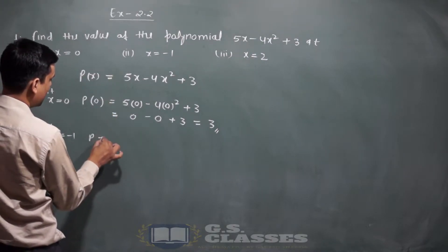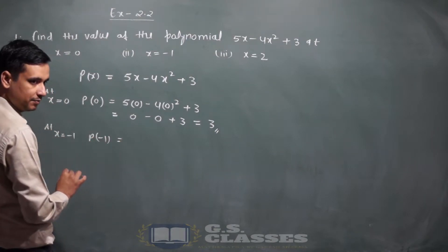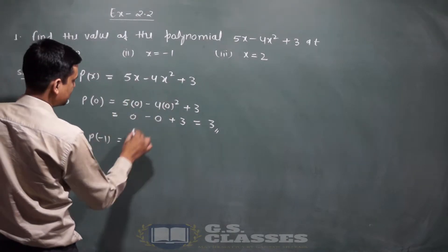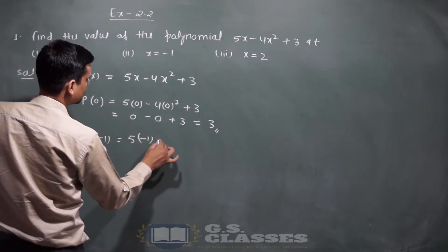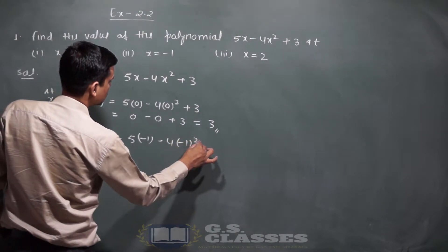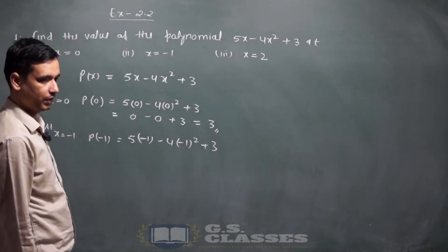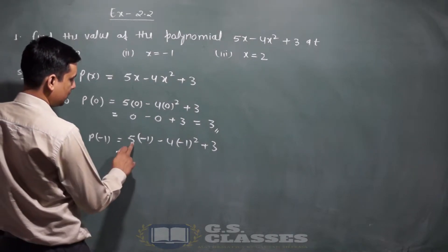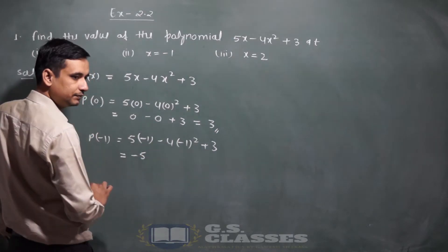x की जगह minus 1 रखना है — 5 into (minus 1), minus 4 into (minus 1) का square, plus 3। Solve करते हैं: 5 का multiply minus 1 से कराएंगे तो आएगा minus 5।